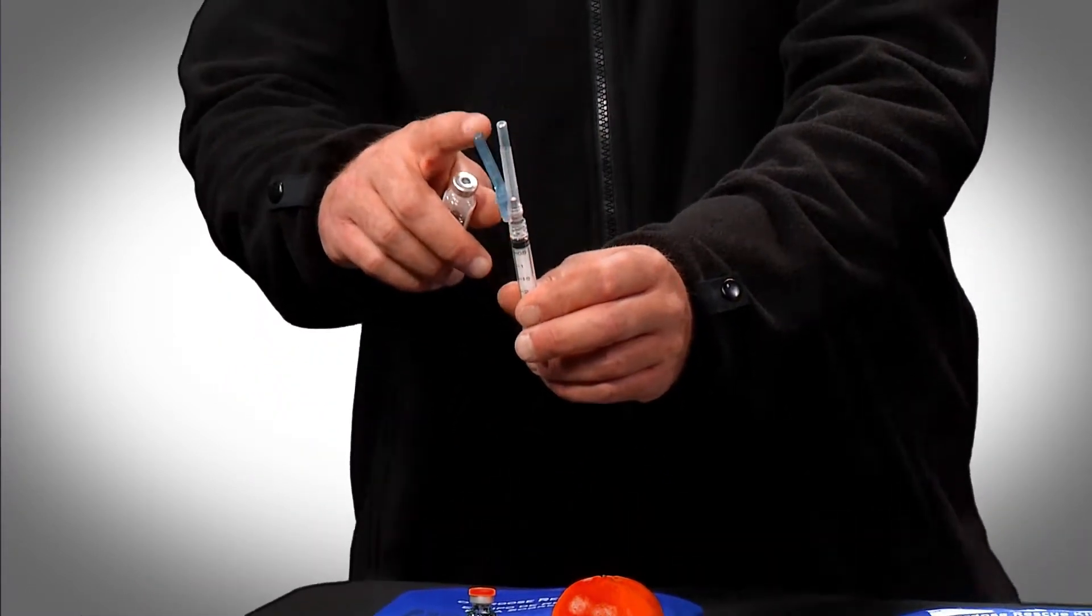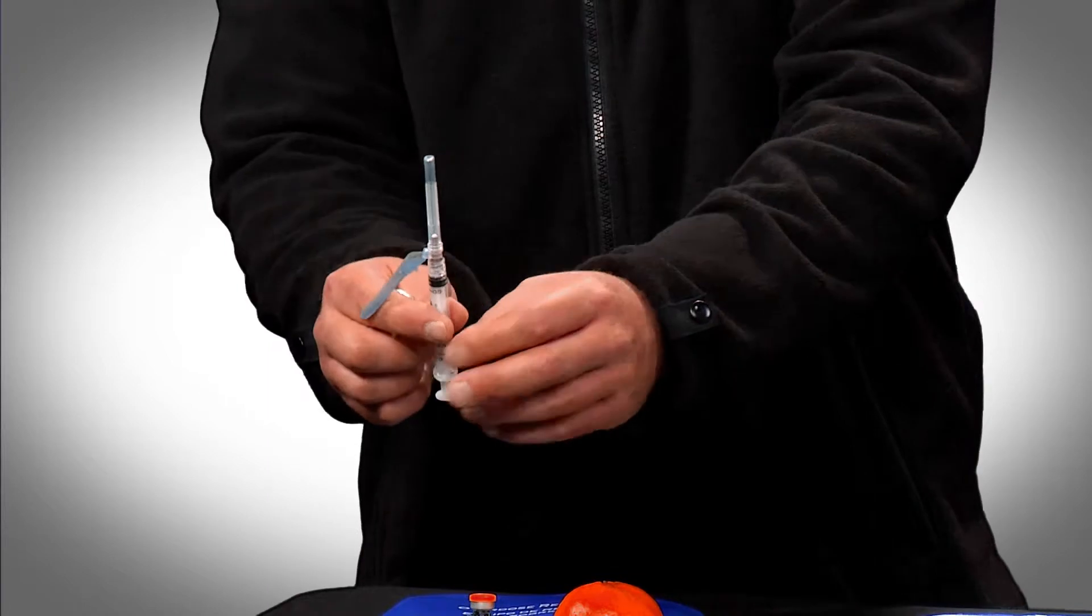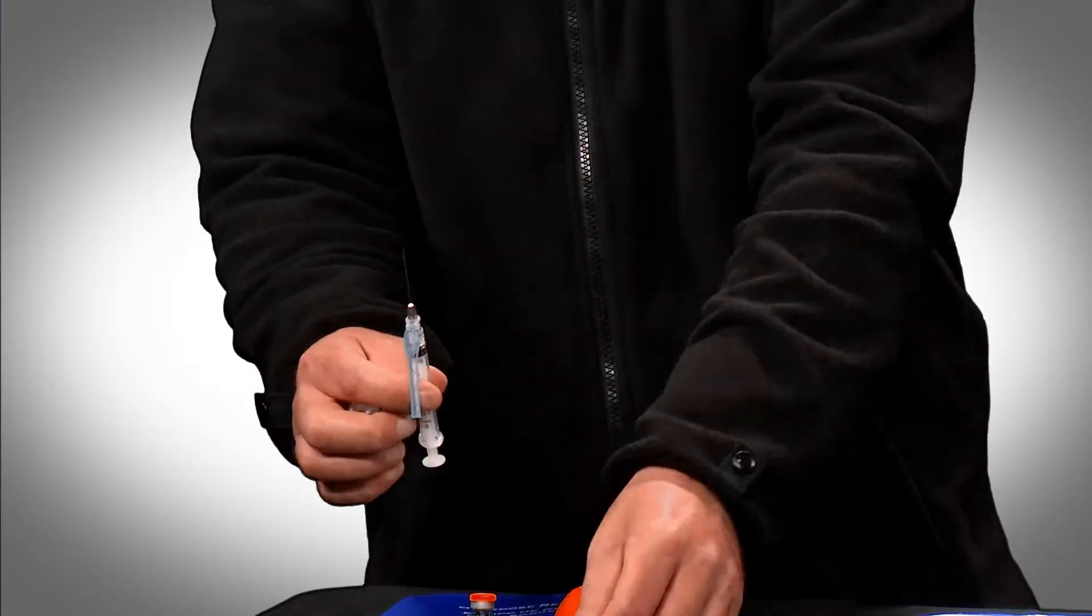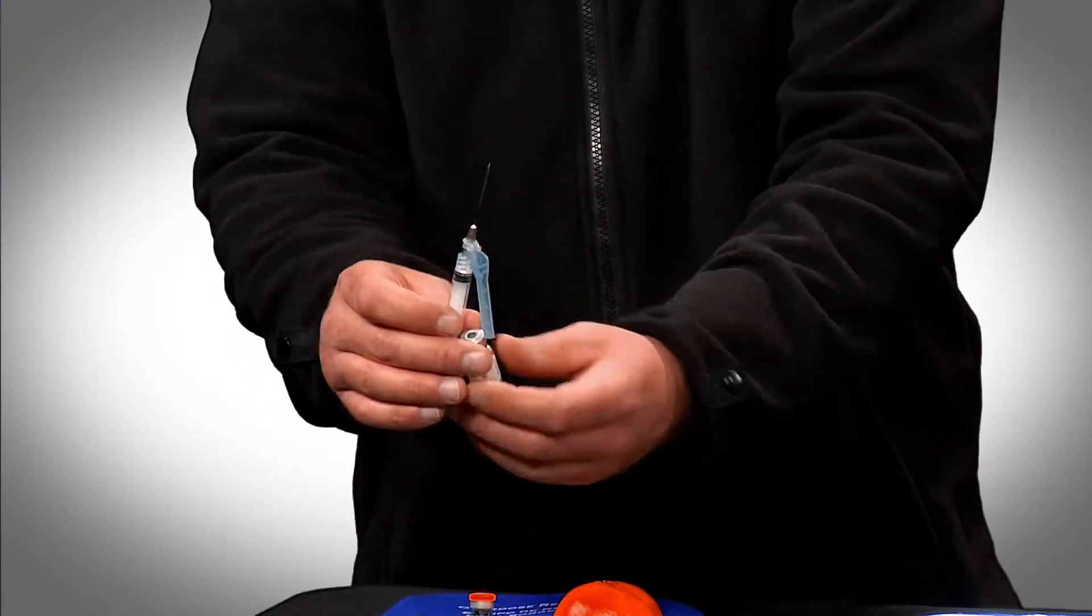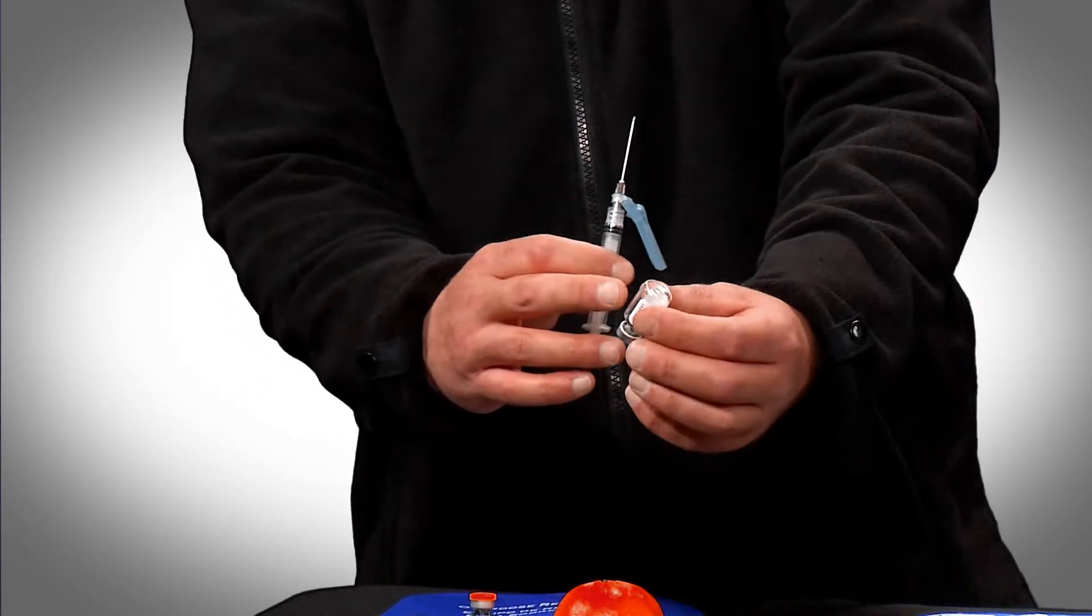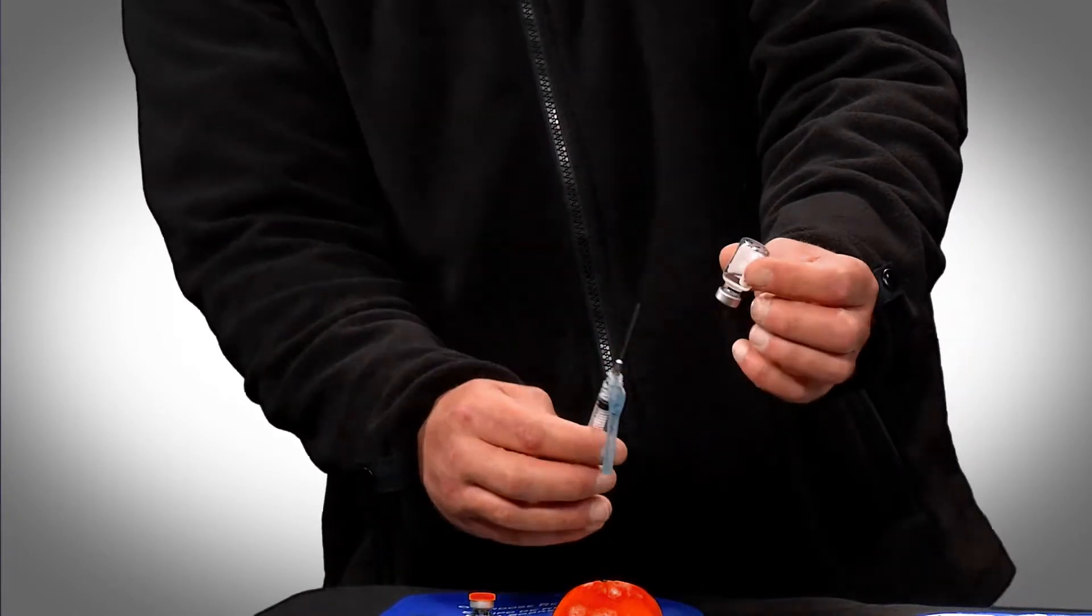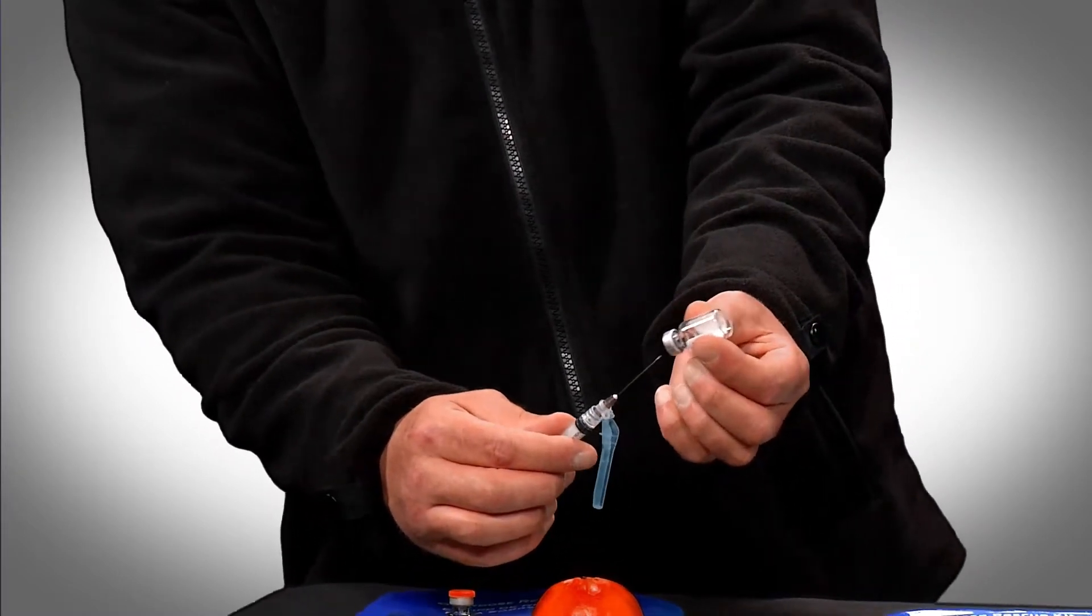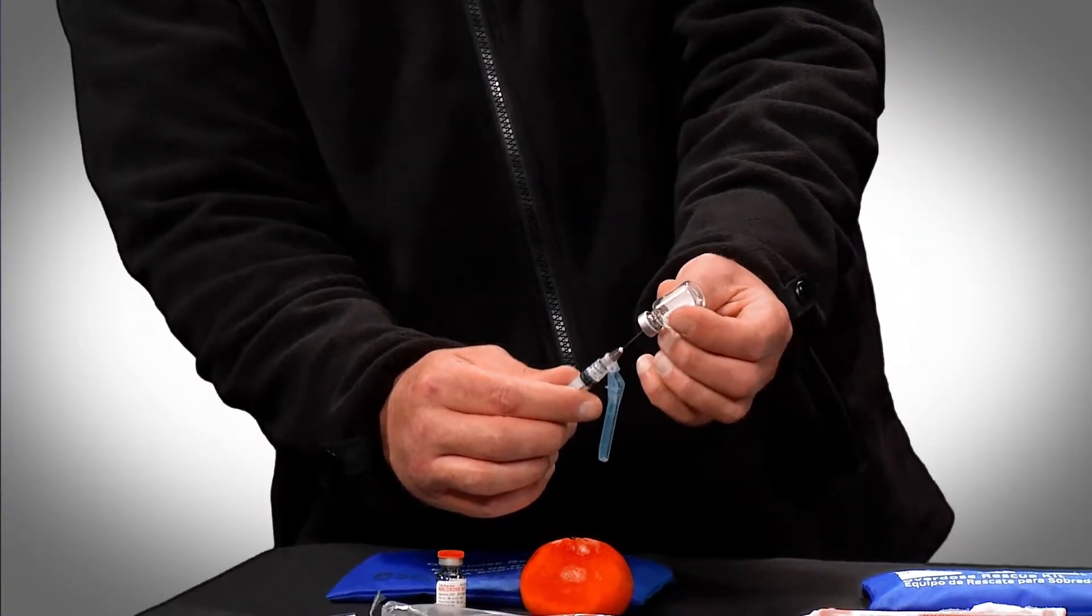Get this green guard out of your way to begin with, then uncap your syringe. Then take your naloxone vial. If you notice, the label doesn't go all the way around. I always tell people to look where the break in the label is so you can see the liquid. Then insert the tip of the syringe through the rubber membrane in the cap of the vial.